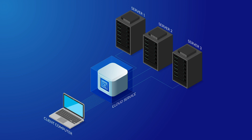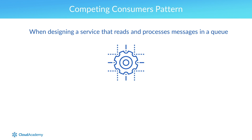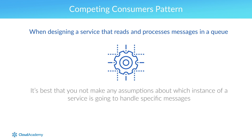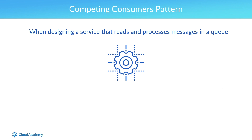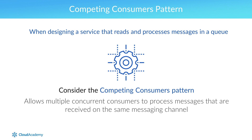Likewise, when scaling a website or cloud service horizontally, don't assume that a series of requests from a single resource will be routed to the same instance. To avoid this, design services to be stateless so you can avoid requiring that requests from an application be routed to the same service instance. If designing a service that reads and processes messages in a queue, don't make assumptions about which instance of a service will handle specific messages, because autoscaling could launch additional instances as the queue grows.